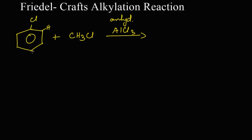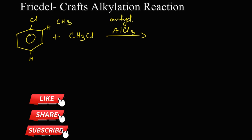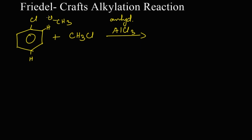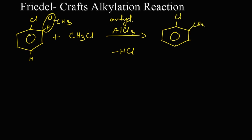Chlorobenzene has an ortho and para directing group, so there will be a hydrogen in the ortho position as well as in the para position. If the reaction takes place at the ortho position, methyl chloride reacts there — the hydrogen from the ortho position and the chlorine from methyl chloride leave as HCl, and the CH₃ replaces that hydrogen. We get ortho-chlorotoluene, also called 1-chloro-2-methylbenzene.